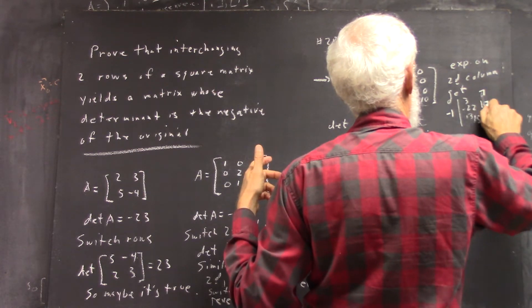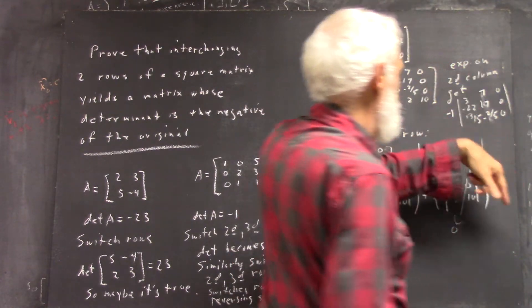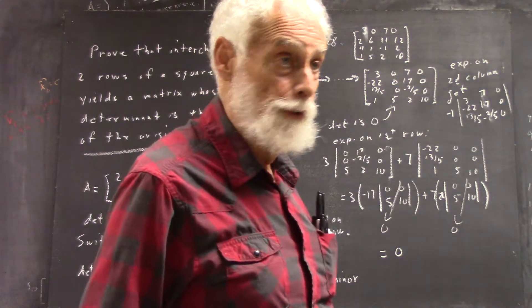...seven, 17, negative two fifths, and the zero, zero, zero over here. And that column of zeros makes the whole thing zero.